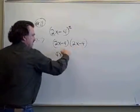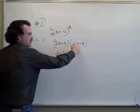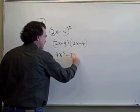The O of FOIL says take the outside ones. That's 2x times minus 4. That's minus 8x.